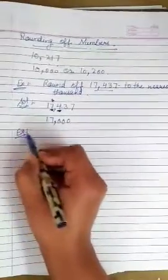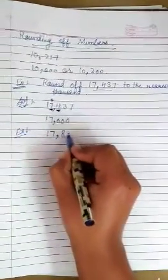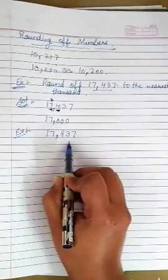Let us take another example. The question is 17,837. We have to round off this number to nearest thousand.